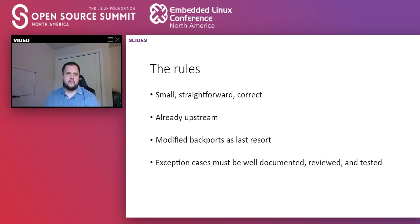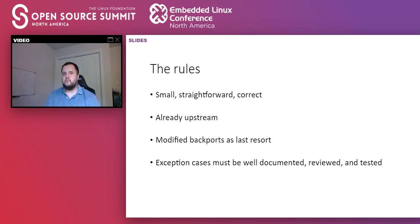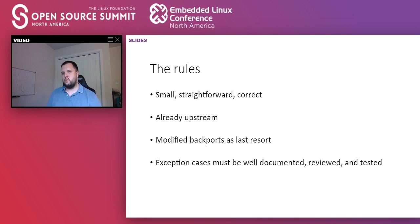This rule helps us prevent commits from having a mix of things — we're making sure that the fix only fixes something and isn't also optimizing a different part of the code. We also want our fixes to be already upstream. It's important that fixes already exist in Linus's tree, and that those patches have passed the bar of being accepted there. We do not want to fork the Stable Kernel Tree.